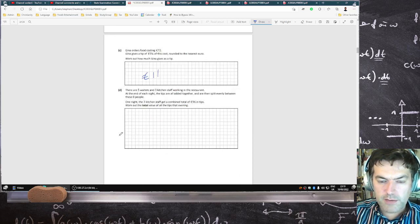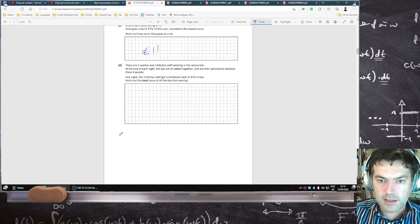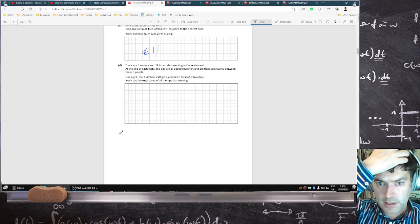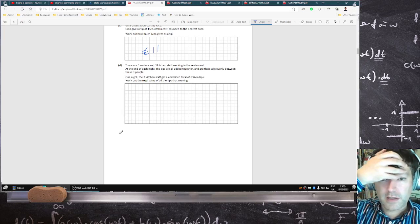There are 5 waiters and 3 kitchen staff working in the restaurant. At the end of the night, the tips are added together and split evenly between these 8 people. One night, 3 kitchen staff get a combined total of 96 in tips. Work out the total value of all the tips that evening.